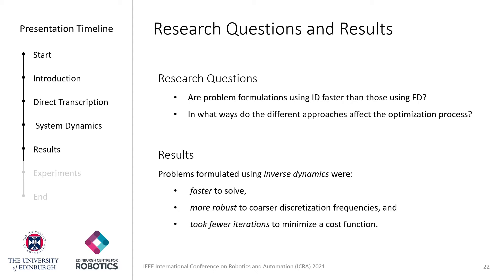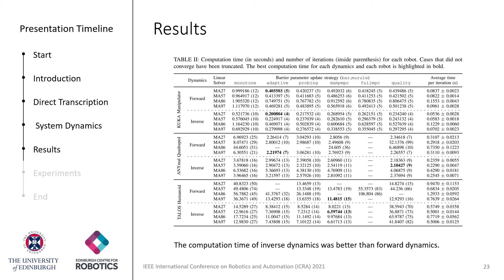I will now reveal our results and then proceed to explain the experiments that led to each of our conclusions. In summary, we have found that direct transcription problems formulated with inverse dynamics were faster to solve, more robust to coarse problem discretization, and took fewer iterations to minimize the cost function. In our first experiment, we compared the total computation time taken by the two alternatives. The results are shown in this table.